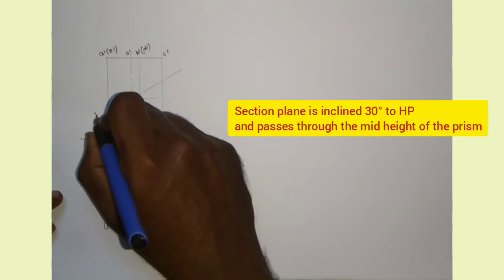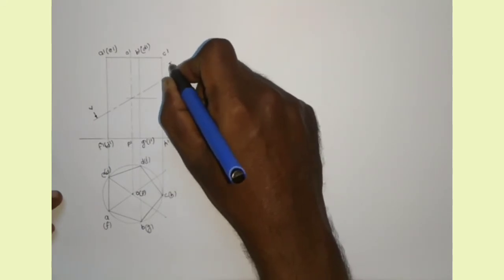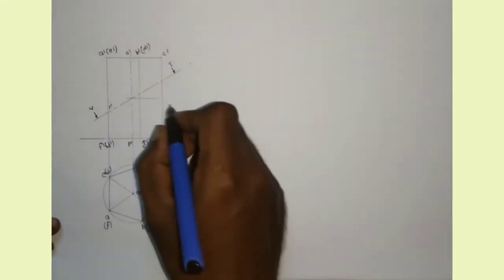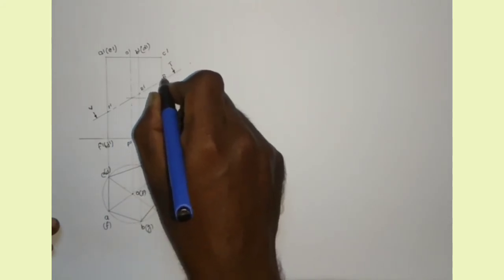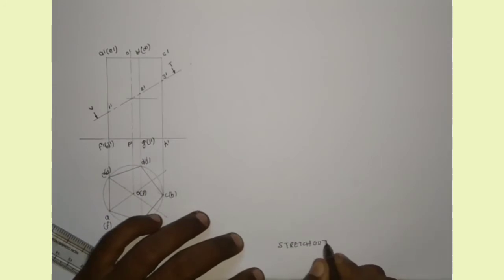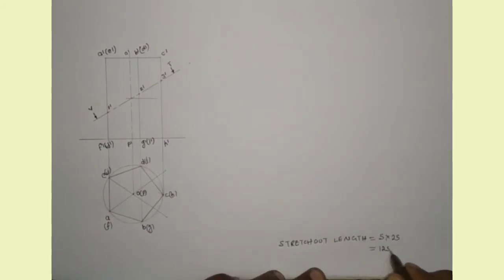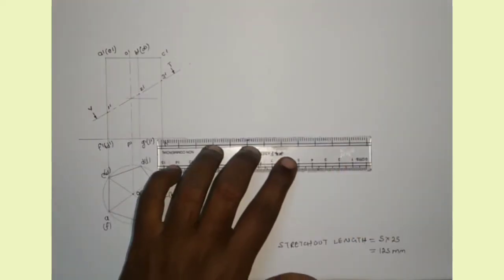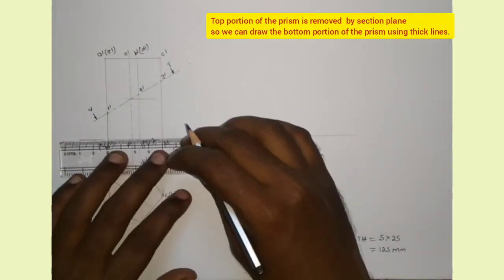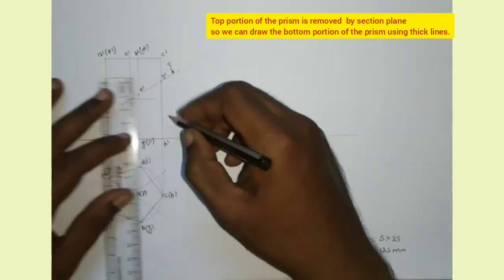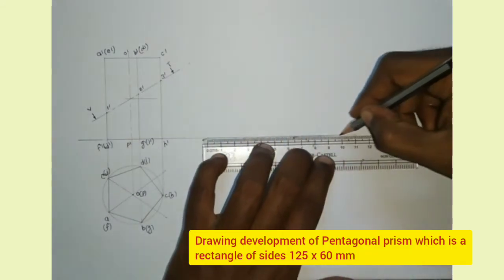I am marking VT there. We can mark the points as 1', 2', and 3'. The length of the base edge is 25 mm and we have 5 base edges, so the stretch-out length is 5 × 25, that is 125 mm. Now I am extending that line. We can draw the bottom portion of the pentagonal prism using an HB pencil because the top portion is removed. Now I am drawing the stretch-out length, that is 125 mm.